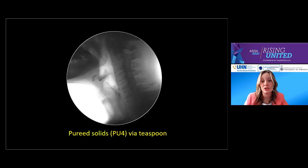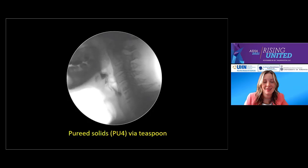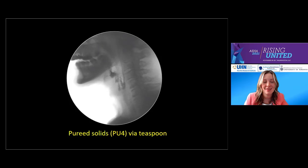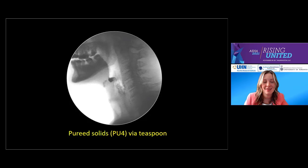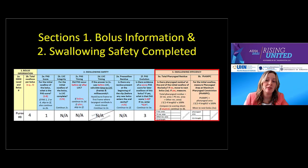Let's review a bolus of pureed solids he trialed and go through our ASPECT-C analysis logic together. In this clip, he's swallowing a teaspoon of pureed solids — the eighth bolus in our fluoro exam. He swallows four times. The PAS on the first swallow in the clip is a pass of one. As a result, we skip forward to 2F, PAS evolution. On sub-swallows of this bolus, swallowing safety actually worsens, and the patient scores a PAS of three.